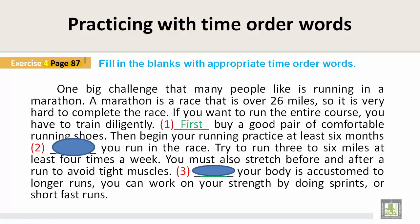First, buy a good pair of comfortable running shoes. Then, begin your running practice at least six months before you run the race. Try to run three to six miles at least four times a week. You must also stretch before and after a run to avoid tight muscles. After your body is accustomed to longer runs, you can work on your strength by doing sprints or short, fast runs.